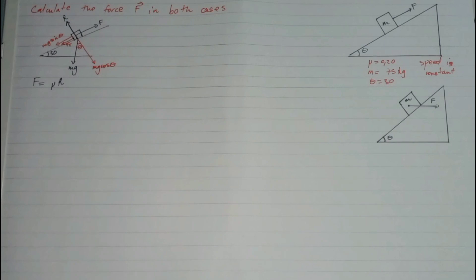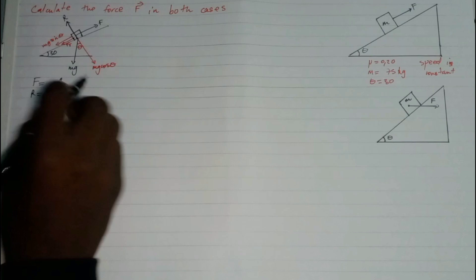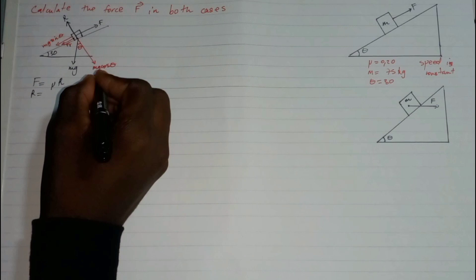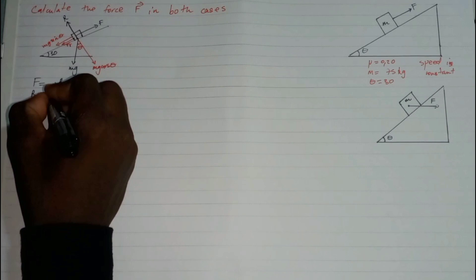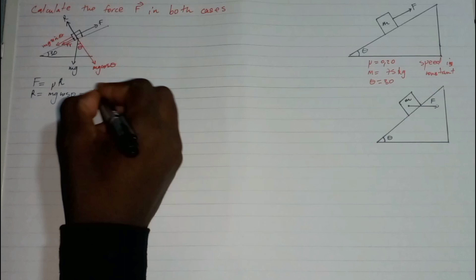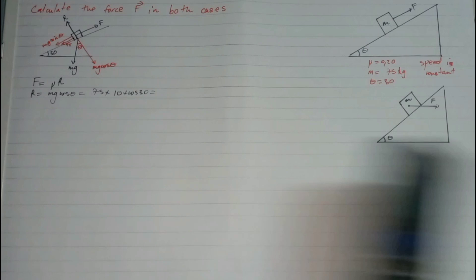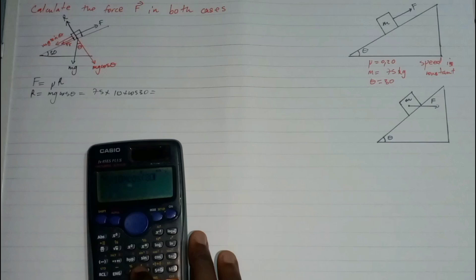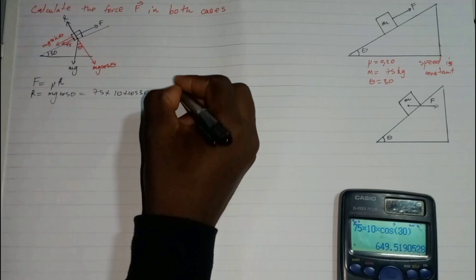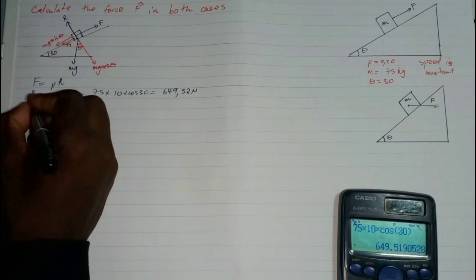Friction is going to be the coefficient of friction times the normal force R. Since we're not going to have an upward motion off the plane, the resultant force perpendicular to the plane is zero, so R equals mg cos theta. That means R equals 75 times 10 times cos 30, which gives us 649.52 newtons.